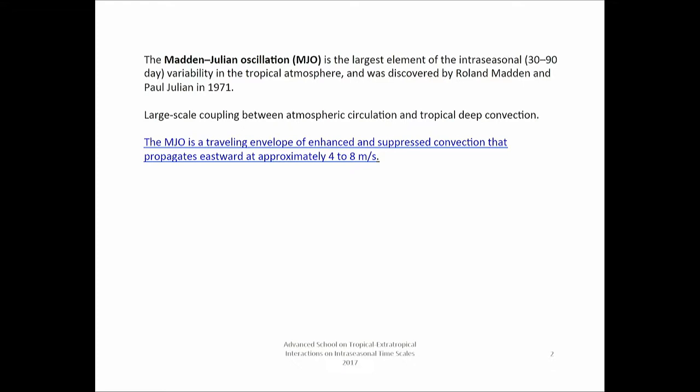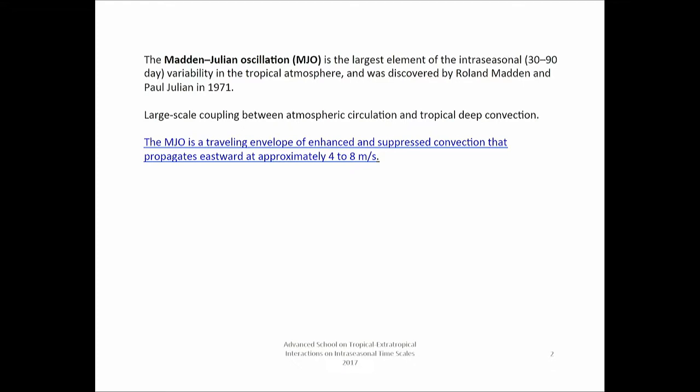I want to emphasize that the abstraction in our mind — the paradigm we think of — is a traveling envelope of enhanced and suppressed convection that propagates eastward. We'll see what the MJO actually looks like in the real data.